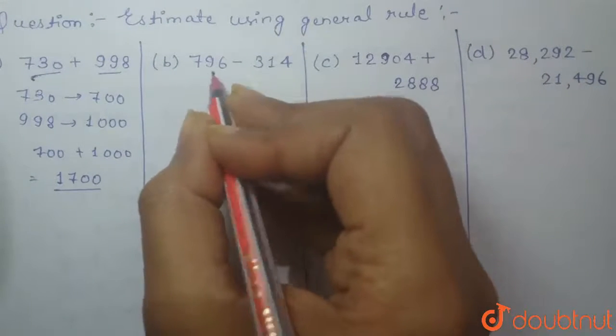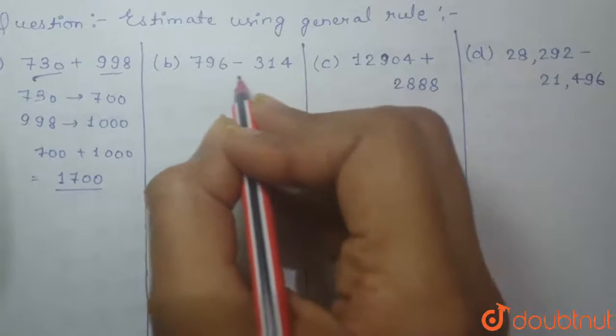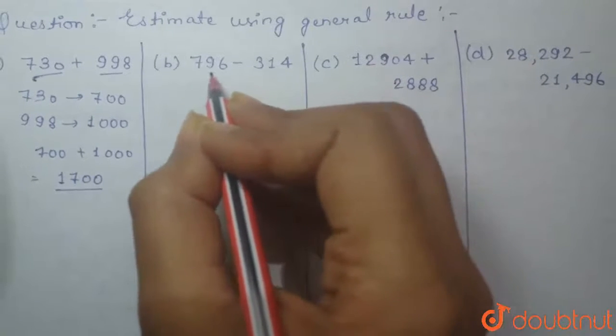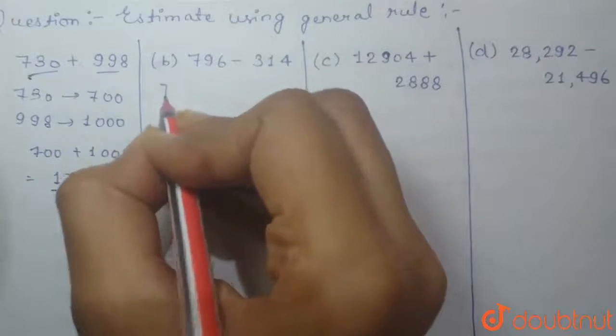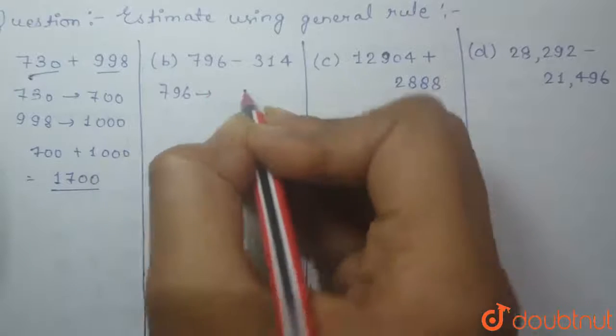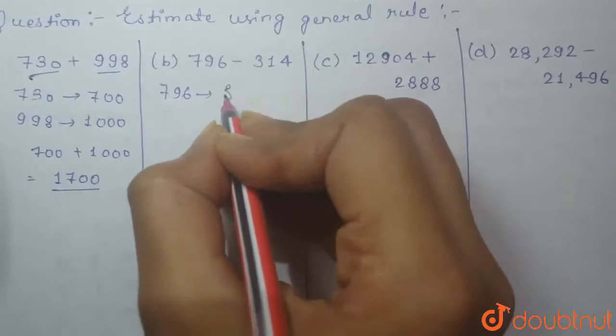In second part, we have to take the subtraction between 796 minus 314. So 796 will be rounded off to 800.